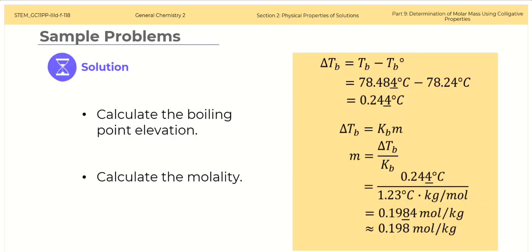Solution: Calculate the boiling point elevation. Subtract the boiling point of the solvent from that of the solution. The difference gives us the boiling point elevation, which is 0.244 degrees Celsius. The underlined number indicates the last significant digit.